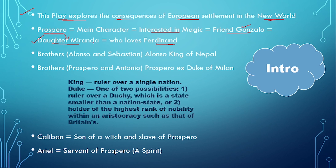We will also see the brothers Alonzo and Sebastian — they were both brothers. Alonzo was King of Naples. Then we have another pair of brothers: Prospero and Antonio. They were both brothers, and Prospero was ex-Duke of Milan.